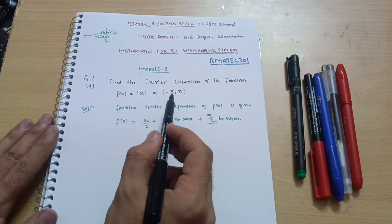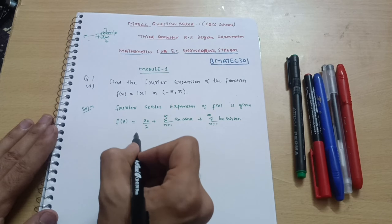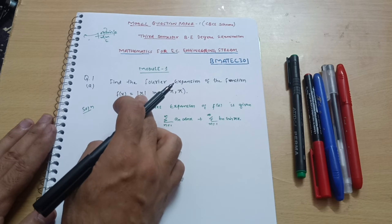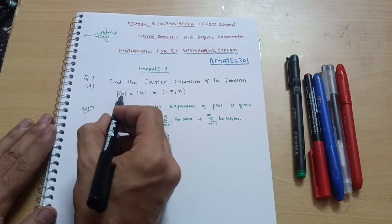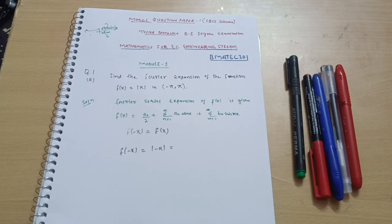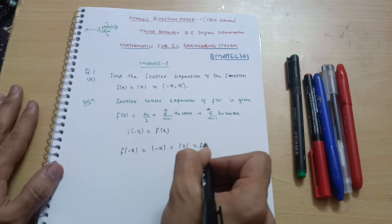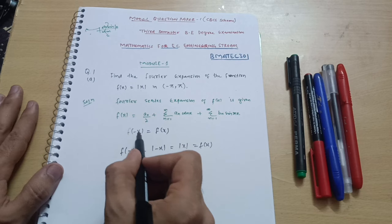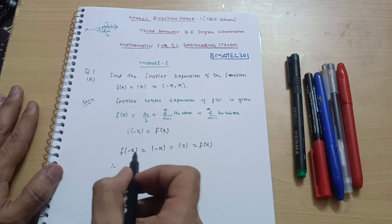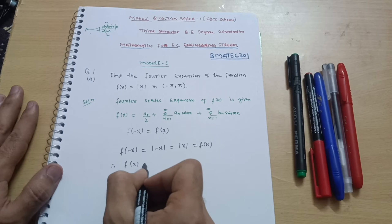In these types of problems where the interval is minus pi to pi, you have to check whether the given function is even or odd. The condition is: f(-x) should equal f(x) for even. Here f(x) = |x|, so f(-x) = |-x|. Whatever value you put inside the mod, you will always get positive, so |-x| = |x| = f(x). Since f(-x) = f(x), this is definitely an even function. If you get f(-x) = -f(x), that is an odd function. But in this case, f(x) = |x| is an even function.